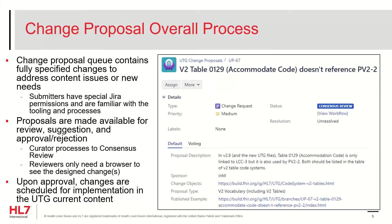Vocabulary change proposals provide a fully specified solution to a terminology issue or deficiency. This includes the technical details of the proposed content changes to the terminology artifacts needed in UTG. These are browsable in the same way that the entire HL7 terminology is, on a consensus review build page. These will be reviewed and voted on, and if approved, the proposed changes will be implemented in the current build. Submitters have special permissions in JIRA that allow them to draft and submit proposals as a JIRA ticket, so they must be familiar with the tools and processes required.